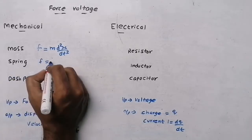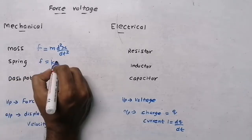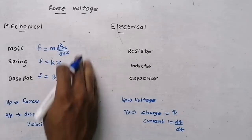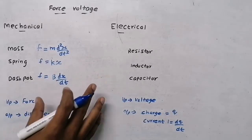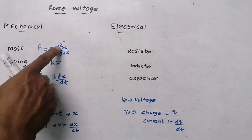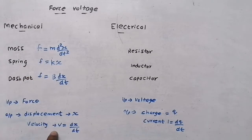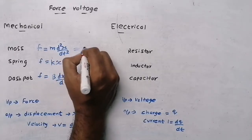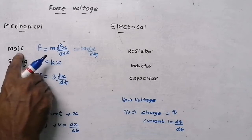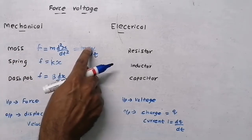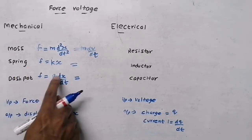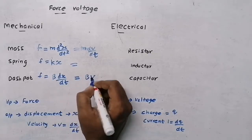For mass, the force equation is F = m·(d²x/dt²) = m·(dv/dt). For spring, F = kx. For dashpot, F = b·(dx/dt) = b·v. We need these equations in terms of velocity. So for mass: F = m·(dv/dt). For dashpot: F = b·v. For spring, we need to express x in terms of velocity.